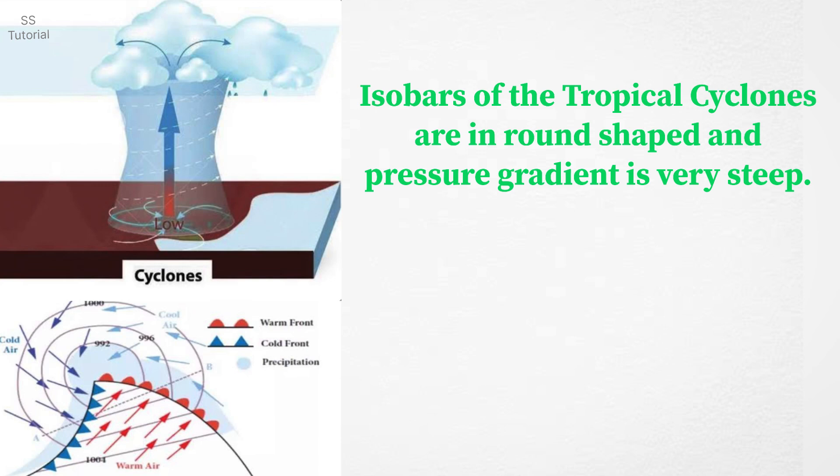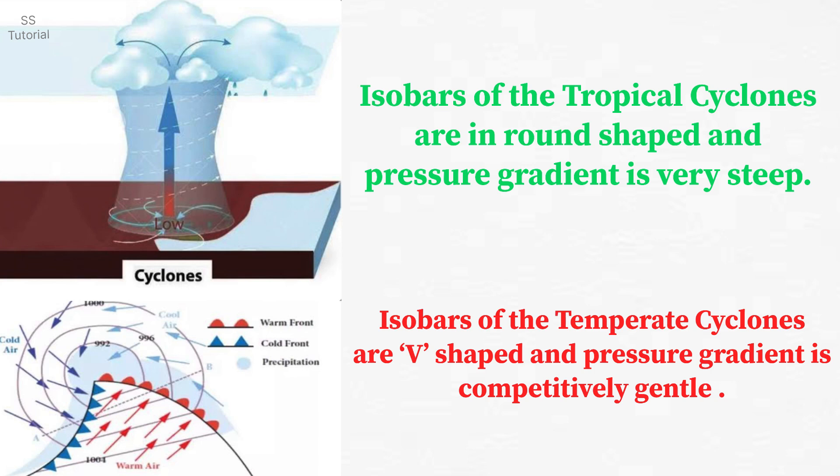In case of a tropical cyclone, the shape of the isobars is round and the pressure gradient is very steep. Whereas in case of a temperate cyclone, the shape of the isobars is usually V-shaped and the pressure gradient is comparatively gentle.